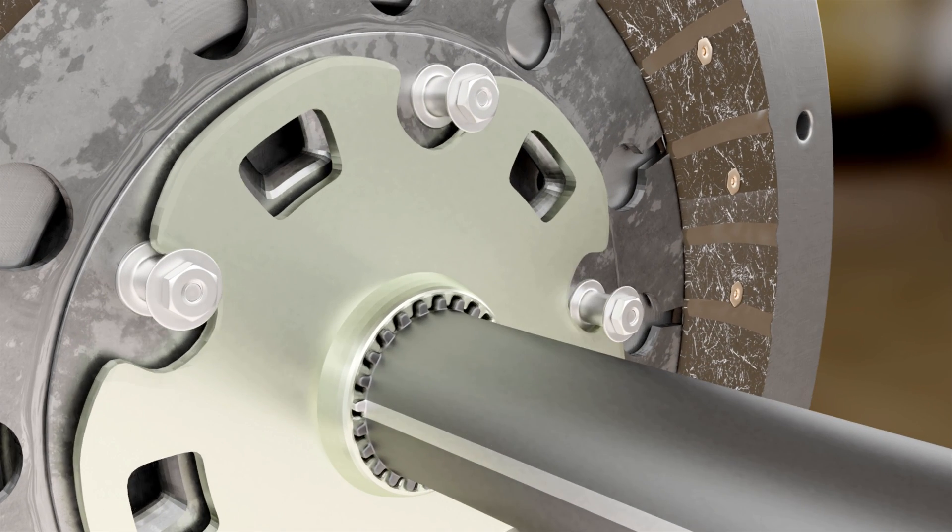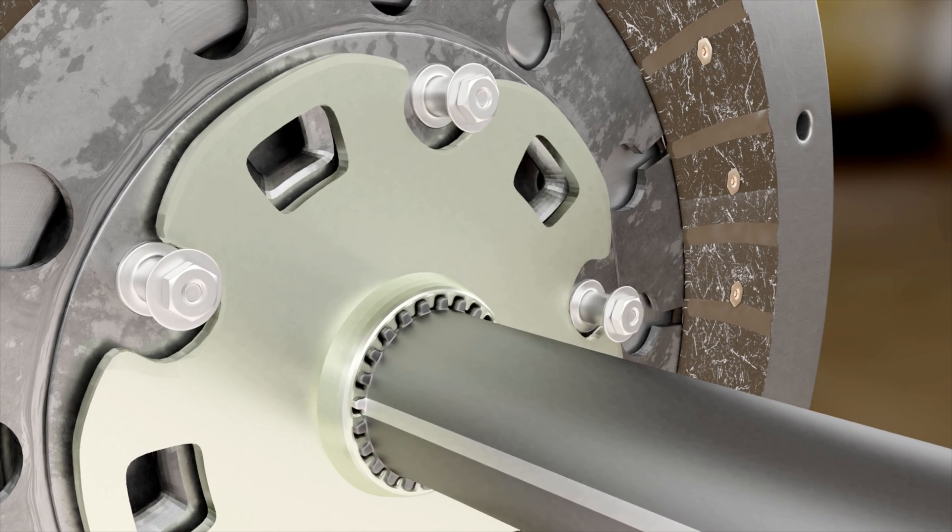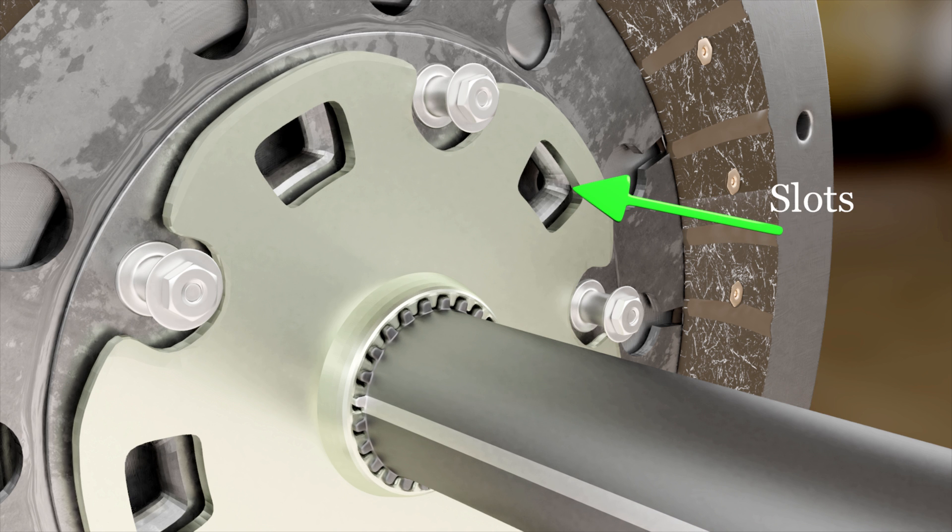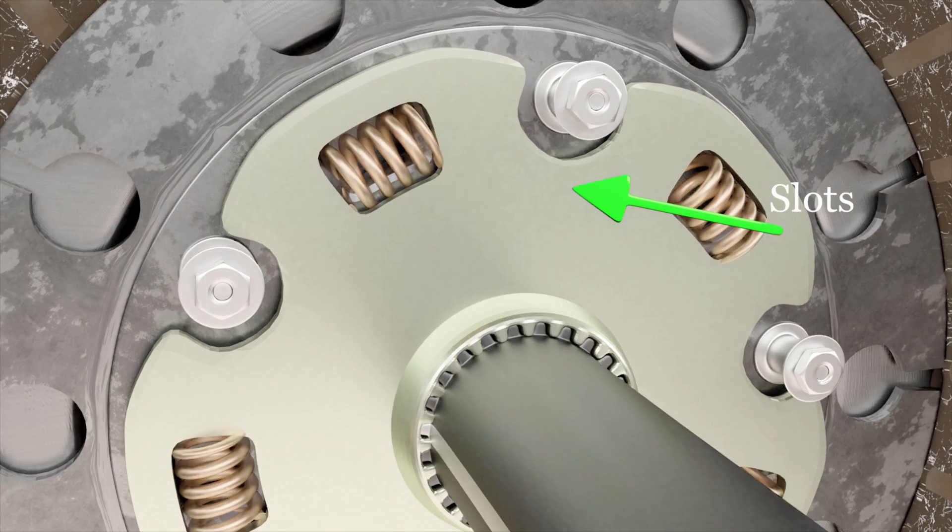The hub is held between these retainer plates and is free to rotate to some extent. Slots are provided to retain the torsional springs in between.